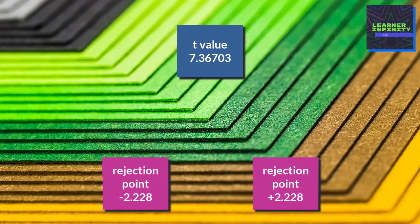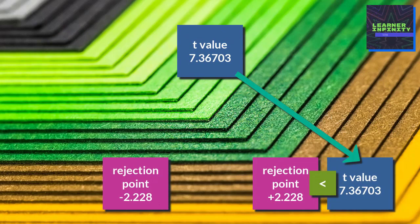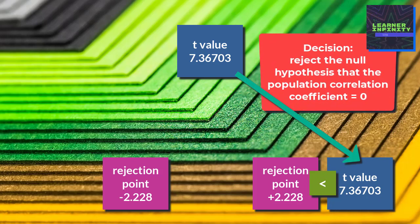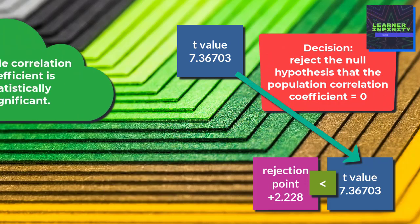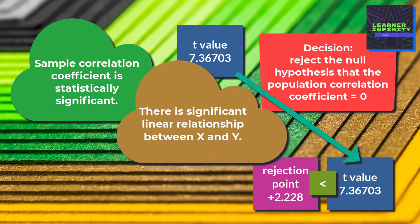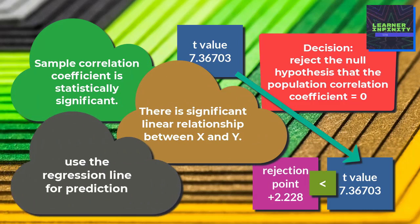The fifth and final step is making the decision. Because the test statistic of 7.36703 is larger than the rejection point of 2.228, we reject the null hypothesis that the population correlation coefficient is equal to zero. The sample correlation coefficient is statistically significant, meaning there is a significant linear relationship between x and y, which also means that we can use the regression line for prediction.